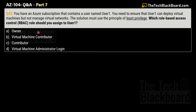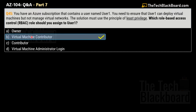Question 45: You have an Azure subscription that contains a user named user1. You need to ensure that user1 can deploy virtual machines but not manage virtual networks. The solution must use the principle of least privilege. Which RBAC role should you assign to user1? The options are: Owner, Virtual Machine Contributor, Contributor, and Virtual Machine Administrator Login. The correct answer is Option B — Virtual Machine Contributor.